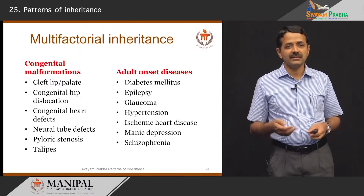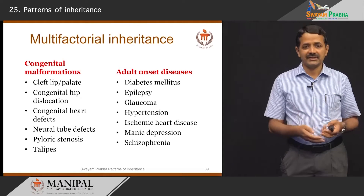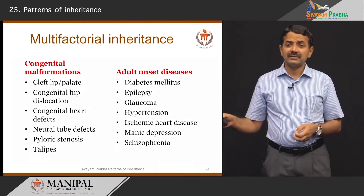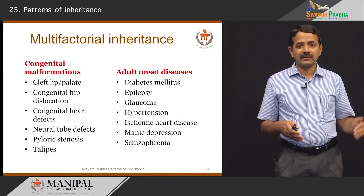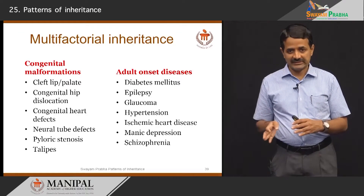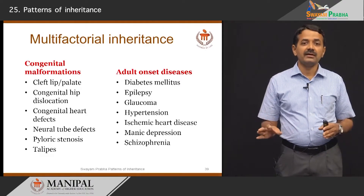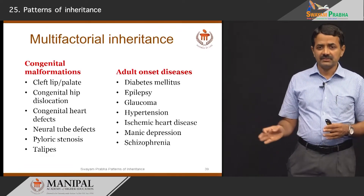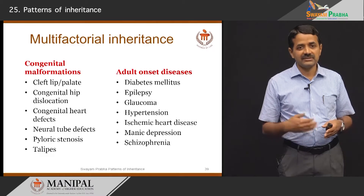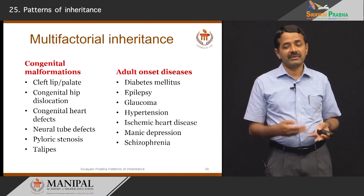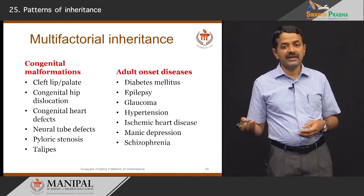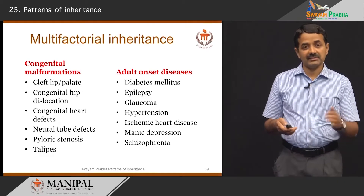In practice we see multifactorial inheritance, where there is simultaneous action of multiple genetic factors and environmental factors — diet, infectious agents, lifestyle, or habits — all of which add or reduce the effect of other factors. Common examples of congenital malformations include cleft lip and palate, congenital hip dislocation, congenital heart disease, neural tube defect, pyloric stenosis, and club feet. Adult-onset diseases with multifactorial inheritance include diabetes mellitus, epilepsy, glaucoma, hypertension, ischemic heart disease, manic depression, and schizophrenia — all showing familial aggregation influenced by multiple genes and environmental factors.